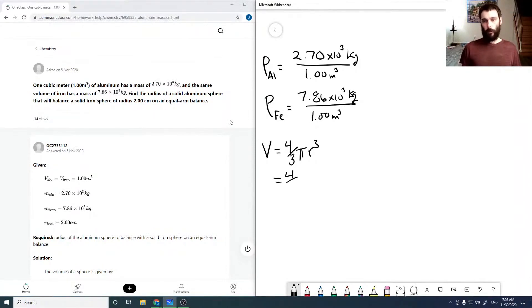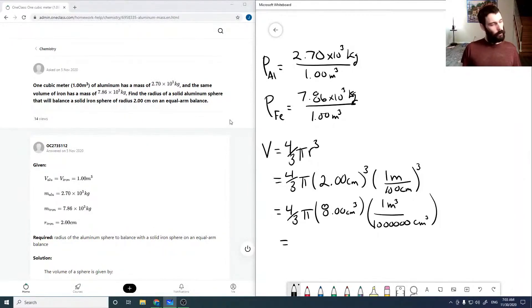So for our iron sphere, it's 4 thirds pi times 2.00 centimeters cubed. We're going to want everything in meters cubed, so we should multiply this by 1 meter per 100 centimeters cubed. So this equals 4 thirds pi times 8.00 times 10 to the minus 6 meters cubed. And so then that equals 3.351 times 10 to the minus 5 meters cubed.